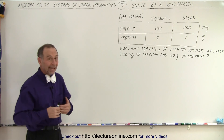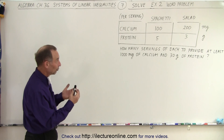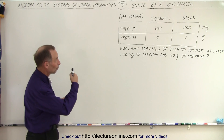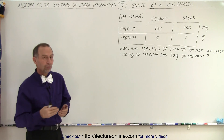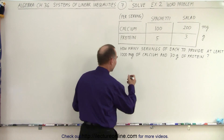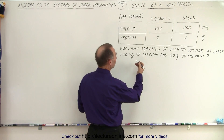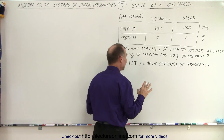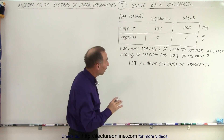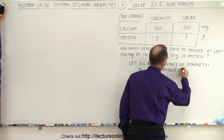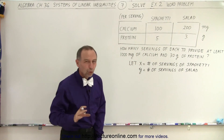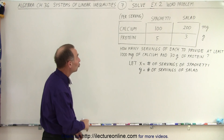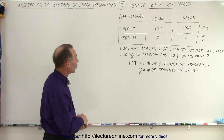Just like with any word problem, we're going to have two variables x and y to represent the number of servings of spaghetti and the number of servings of salad. Let x equal the number of servings of spaghetti, and let y equal the number of servings of salad. Now we need to come up with two inequalities, because we have two unknowns.